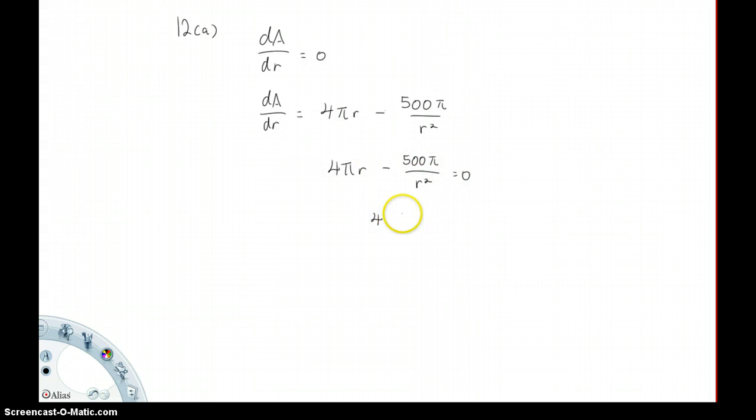We have 4πr³ will be equals to 500π after simplification. 500 divided by 4, we will get r³.